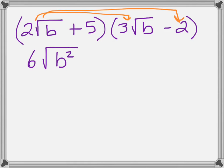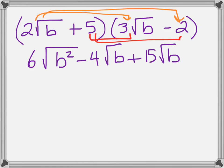Then we multiply the 2 square roots of b times negative 2, giving us negative 4 and then square root of b. Then we go to our second term in our first binomial, 5, and we're going to say 5 times 3 square roots of b is 15 square roots of b, and then 5 times negative 2 gives us negative 10.